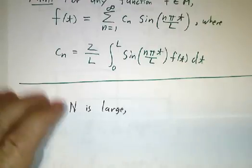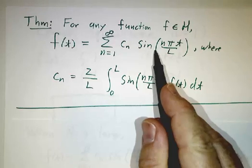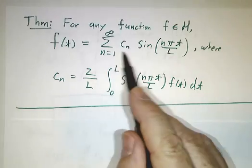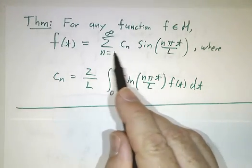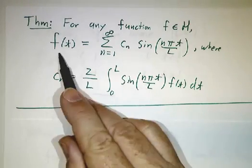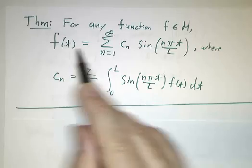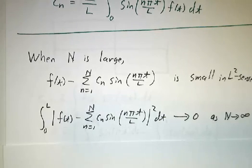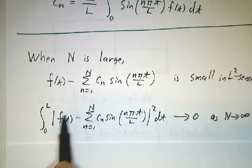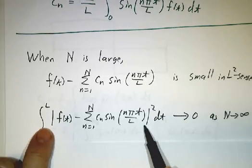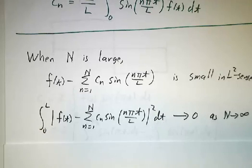Any function can be written as a sum of sine waves with coefficients given by those integrals. When I say it's a sum of sine waves, I mean that if you cut off the sum after 100, 200, or 1,000 terms, you get something very close — not close for every value of t, but close in an L² sense. That is, if you take f minus the partial sum and square it and integrate it, you get a very, very small number.